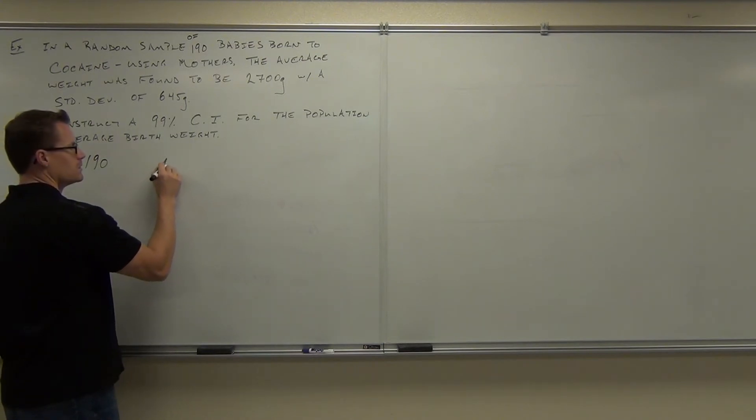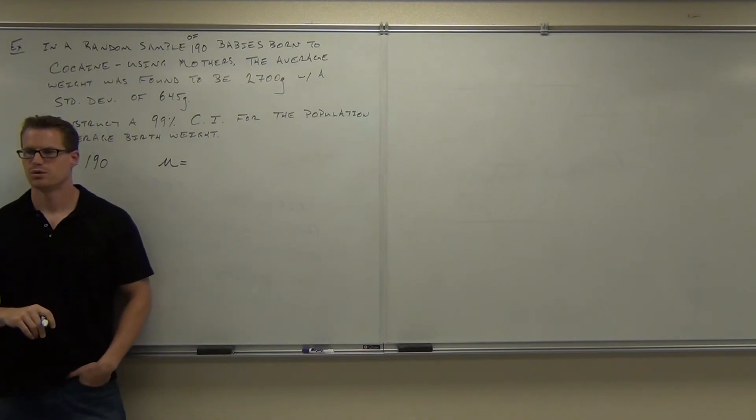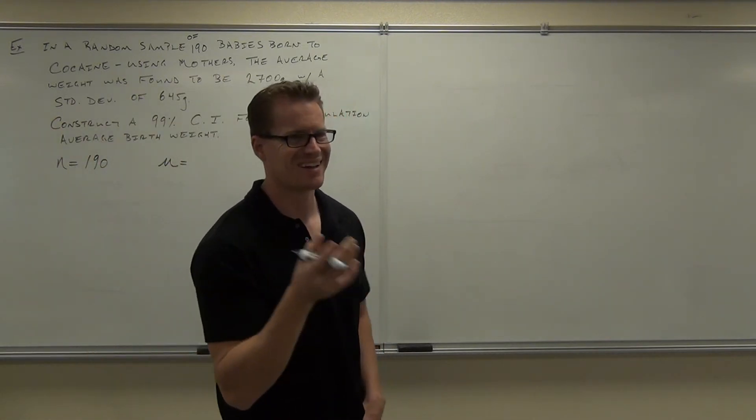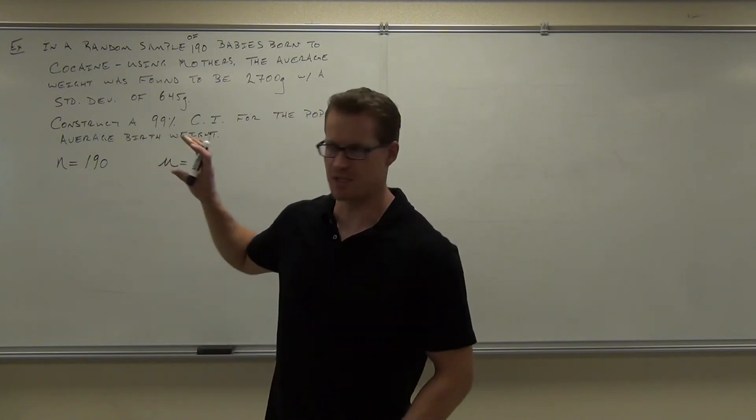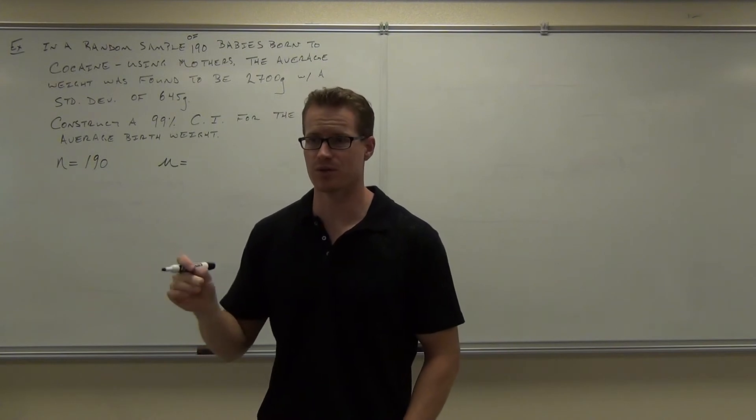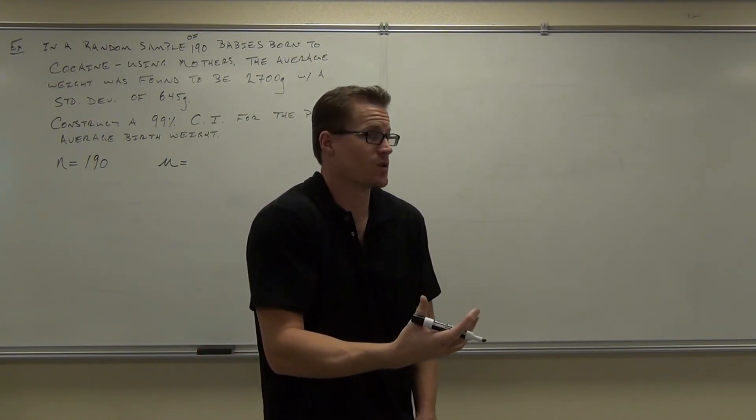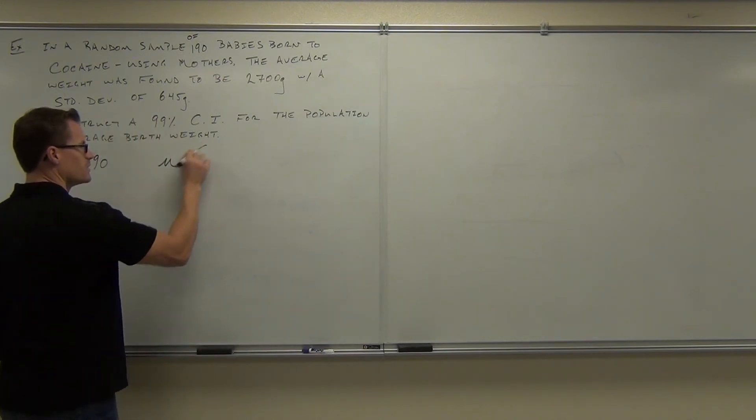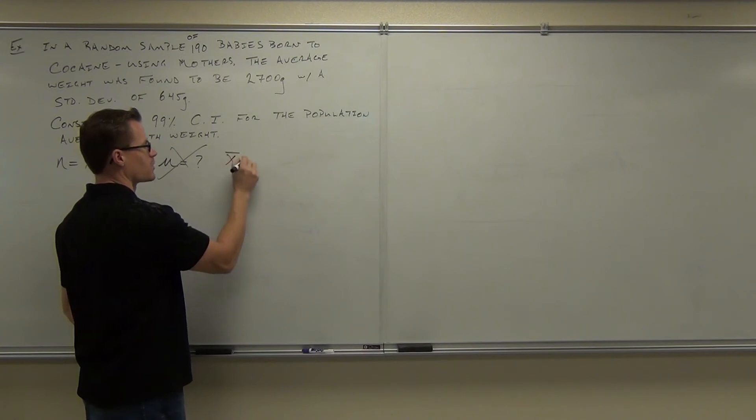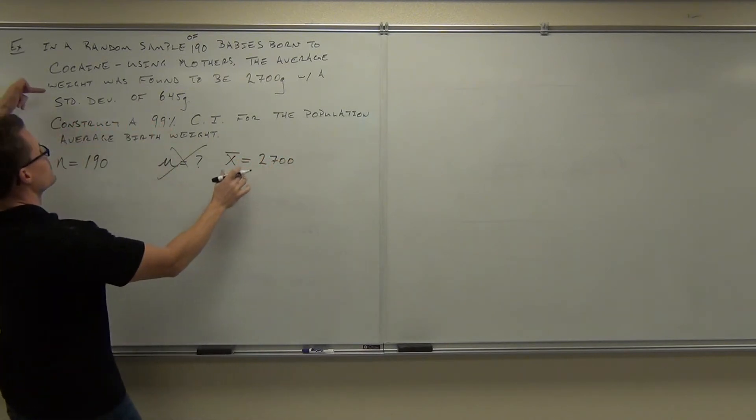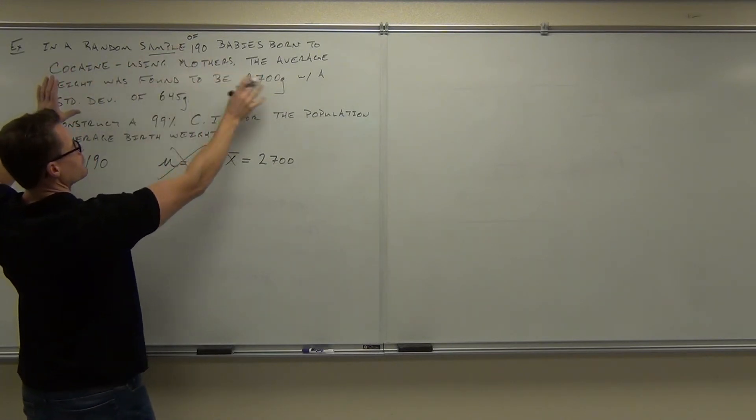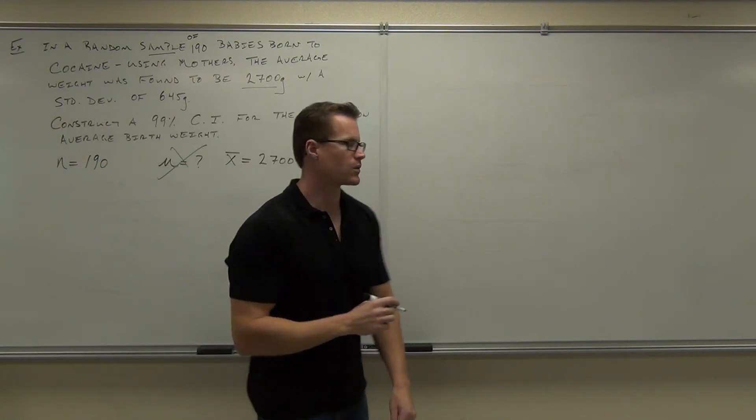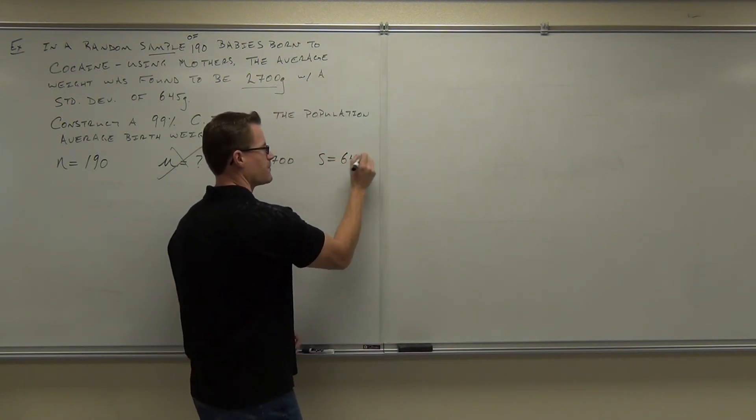Do you know the mu? Why not? Why don't we know the mu? If you knew the mu, you wouldn't even be doing this problem because you would know the mu. Right now what you're trying to do is estimate the mu. Are you clear on that? Why would you be estimating the mu if you knew the mu? That'd just be silly. That'd be dumb. We wouldn't want to do that. So of course we don't know the mu. That's what we're trying to estimate. What do we know? X bar. Good. How much is X bar? And of course that came from the sample, the average was 2,700. And you said we knew sigma or we knew S. Which one? S.